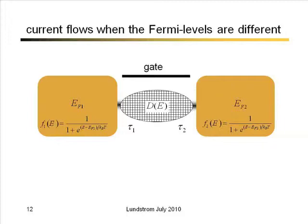That's our picture of a MOSFET. We want to relate this to the picture Professor Dada was talking about and calculate the IV characteristics using the ideas from his lecture. As Professor Dada discussed, we think about the device as having some density of states, and then two contacts — always large, maintained near thermodynamic equilibrium, characterized by a Fermi level or electrochemical potential. If we apply a voltage to the drain, we lower the electrochemical potential in the drain, so the second Fermi level is different from the first.